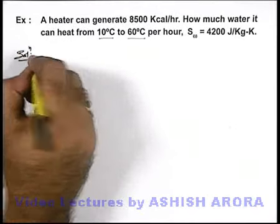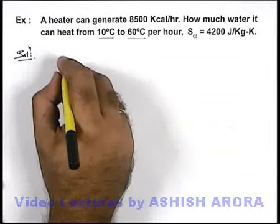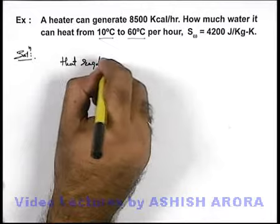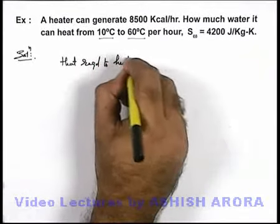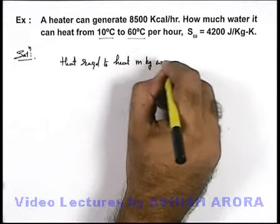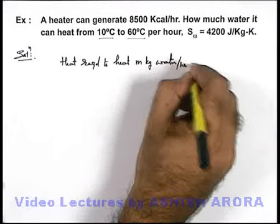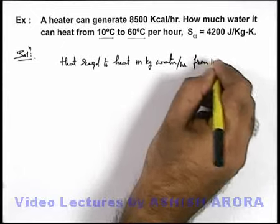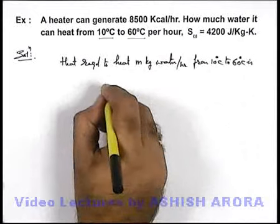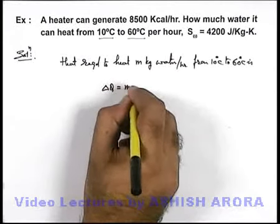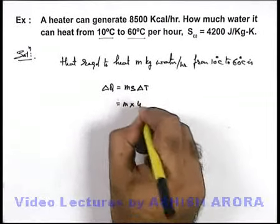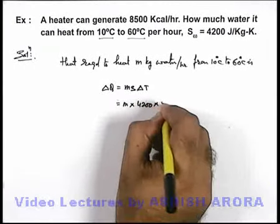In this solution, let's start with the situation. The heat required to heat let us consider m kilograms of water per hour from 10 degrees centigrade to 60 degrees centigrade is delta Q, which we can use as m·s·delta T. So for m kilograms of water it will be m into 4200 multiplied by 50.